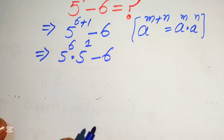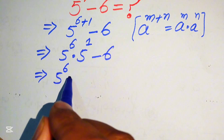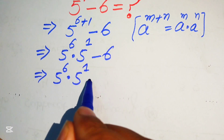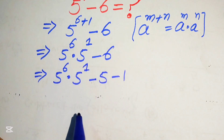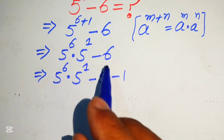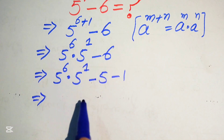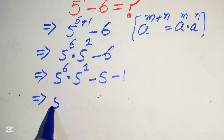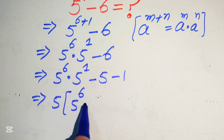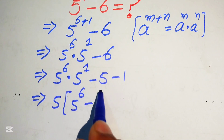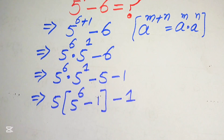Now we focus on the 6 and break it as: 5 to the power of 6 multiplied by 5 to the power of 1, minus 5 minus 1, because minus 5 minus 1 equals minus 6. In the next step, 5 is the common term, so we take 5 common from the first two terms, and the remaining terms are 5 to the power of 6 minus 1, over minus 1.